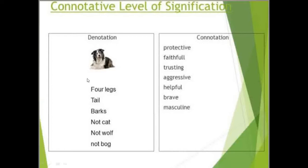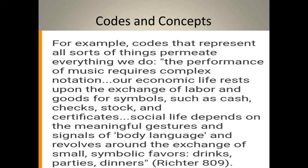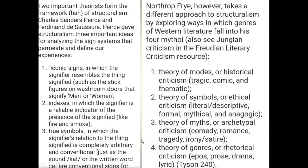At the connotative level, denotation would be a dog — an actual animal and the literal sense of what the dog is. At the connotative level, a dog would indicate whether it is protective, faithful, trusting, aggressive, helpful, brave, or masculine — all of these connotative meanings. We also saw two theorists: Charles Sanders Peirce and Northrop Frye, and how they seemed to have analyzed sign systems.